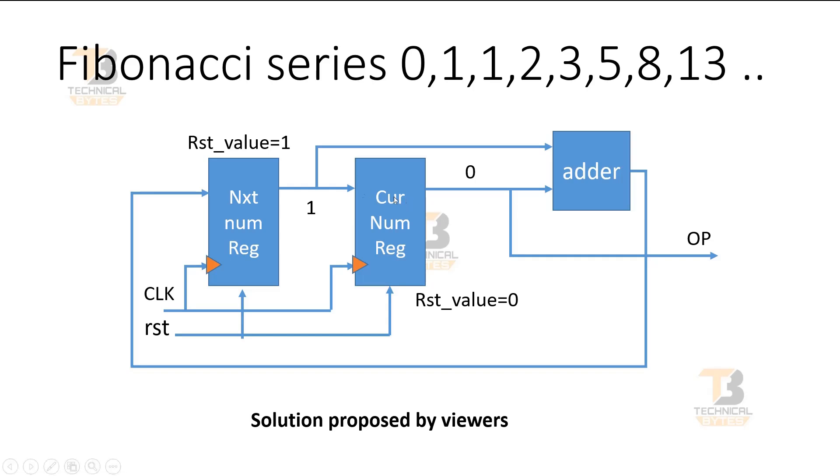The reset value of the first register is 0 and the reset value of the second register is 1. Output of both these registers is going to the input of the adder, and finally the output is again applied at the input of the second register, and the final output is the output of the first register.